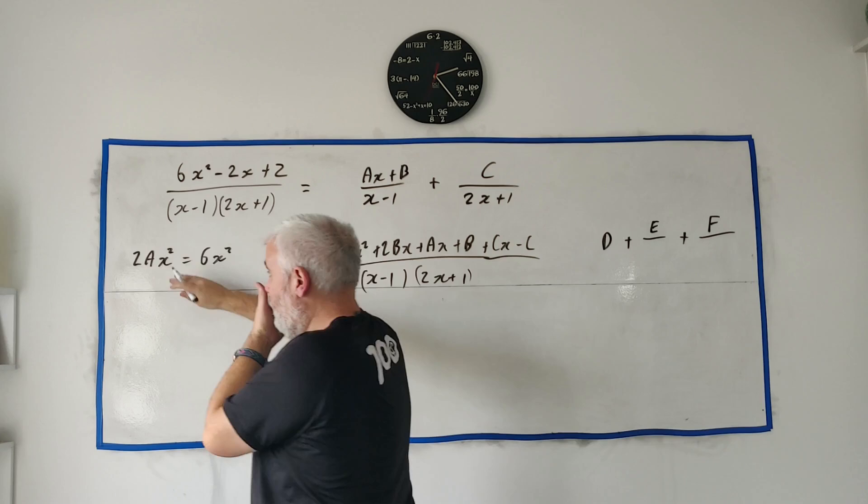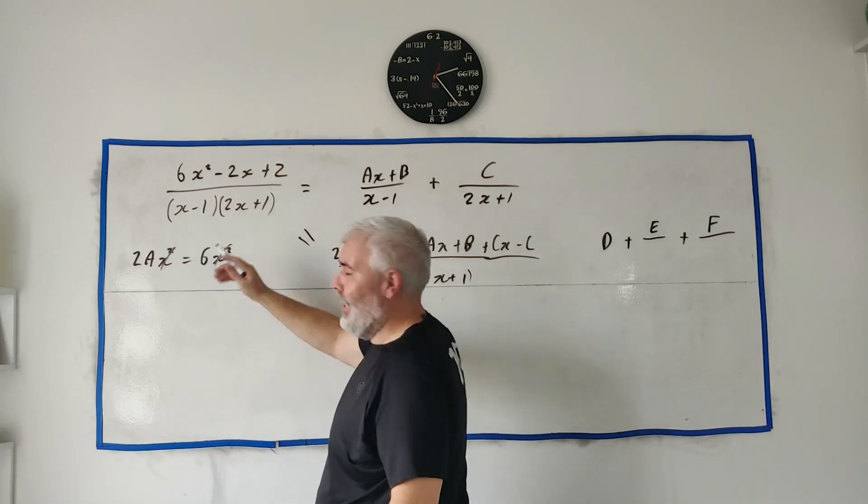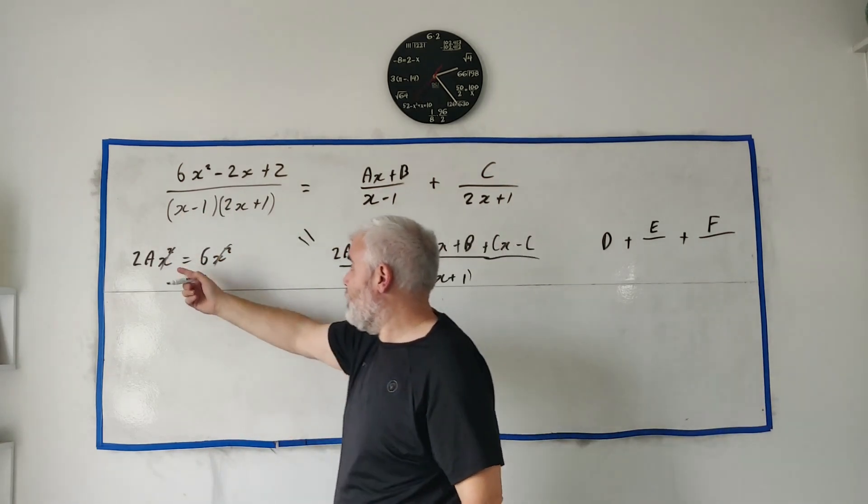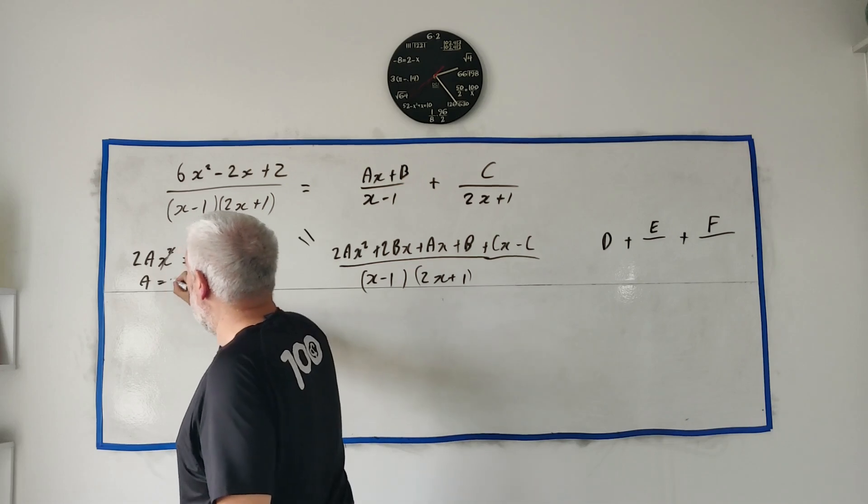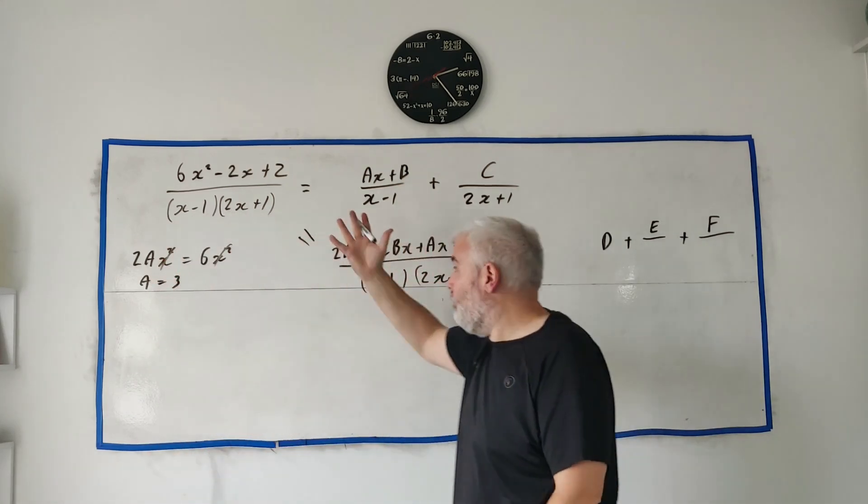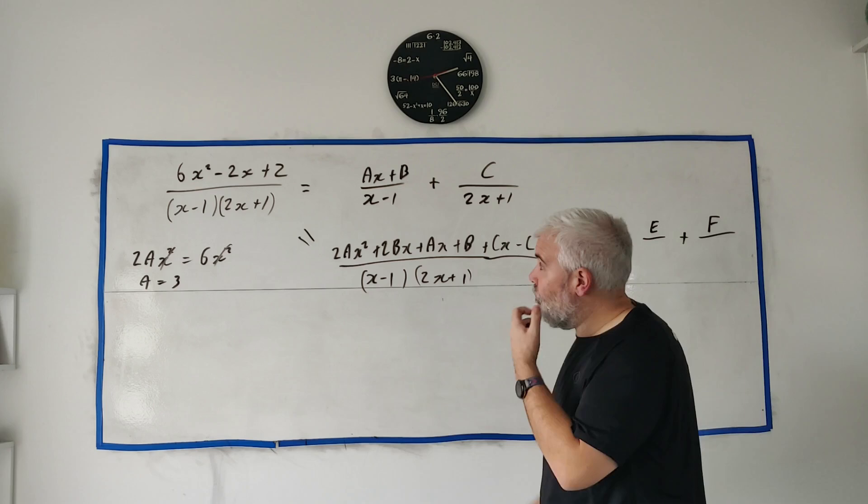There's only one term for x squares, that's handy. That means 2ax squared wants to equal 6x squared. All the x's cancel but I won't bother writing the x's in future. That means 2a equals 6, a equals 3. We've solved one of our numbers.